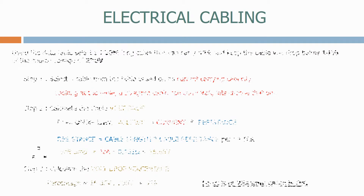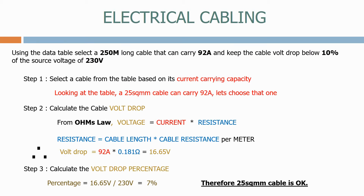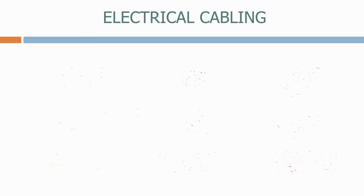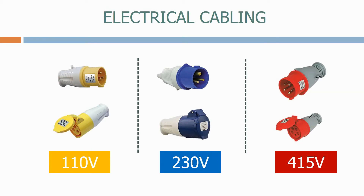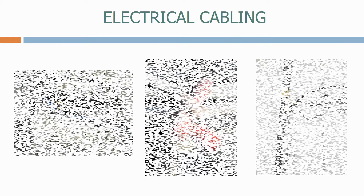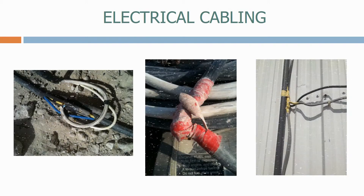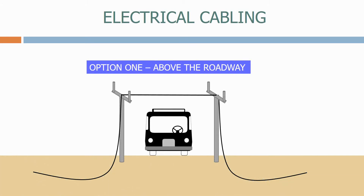In the next section, we look at electrical cabling. We start by seeing how we size an electrical cable based on the current that it carries and the voltage drop. We then look at how we install cables safely on site, and provide some examples of poor practice, before finally looking at the different options of how we take a cable across a roadway.